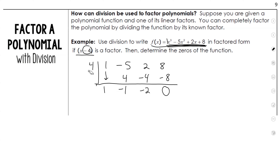Whenever you do not have a remainder, that means that this is indeed a factor. We'll talk about that more later. Now remember, we go down a degree. We started off with the cubic — the exponent was 3. We go down a degree, so this will be x squared minus x minus 2.